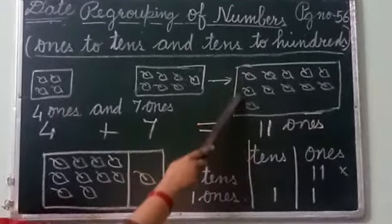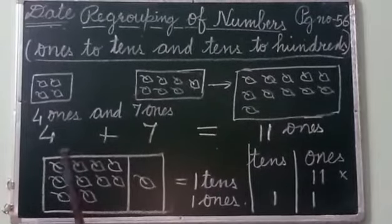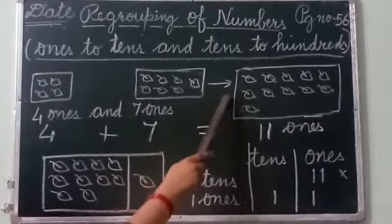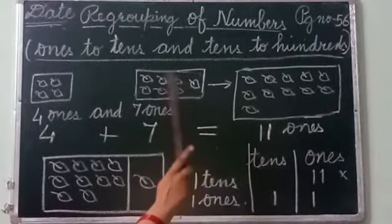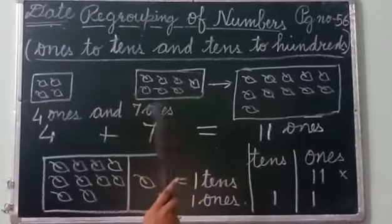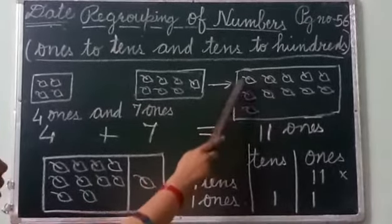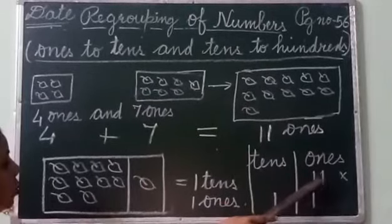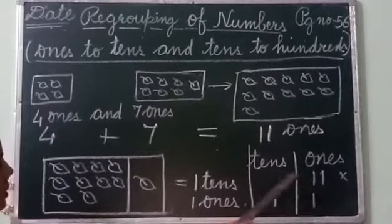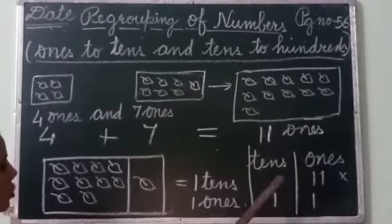Now, 11 ones in one box — in one group — you can't write 11. It is a bunch of 10. If you get 10 in one group, that is a bunch of 10. So here you have got 11, and you can't write 11 in one space.